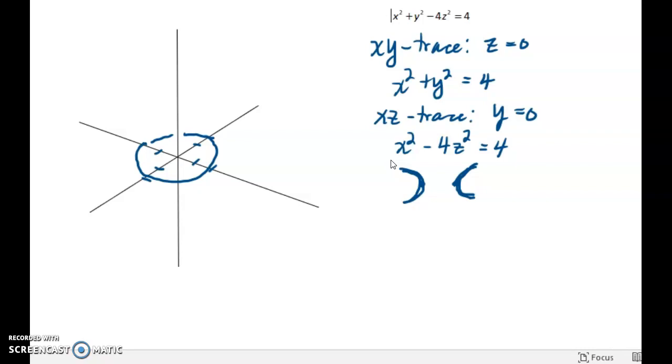It doesn't have z-intercepts because if I set x equal to 0, I get negative 4z squared equals 4, which has imaginary solutions. So I start with the x-intercepts, which are 2 and negative 2.